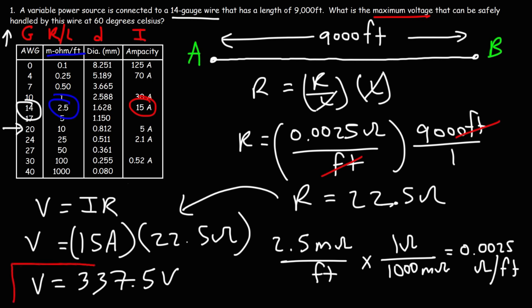Anything higher will exceed the maximum current rating of 15 amps for the 14-gauge wire. Now you know the relationship between wire size, resistance per unit length, diameter size, and the maximum current a wire can handle. Thanks for watching, and don't forget to subscribe to this channel.